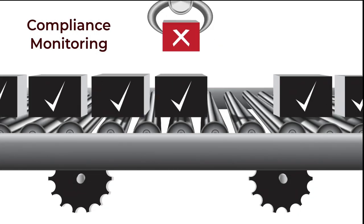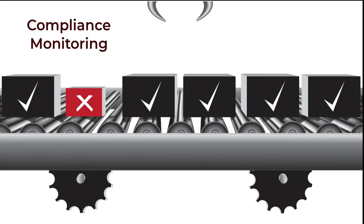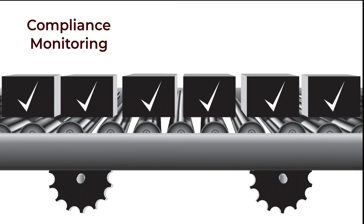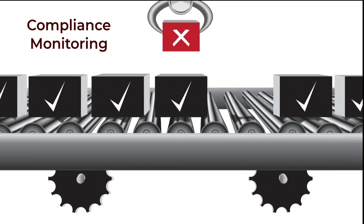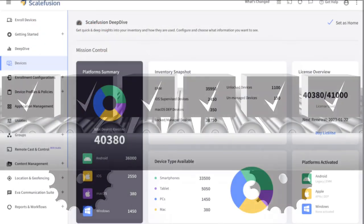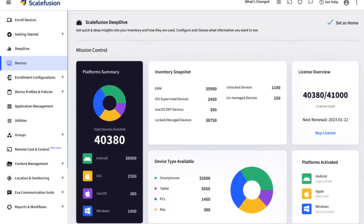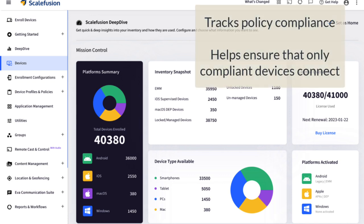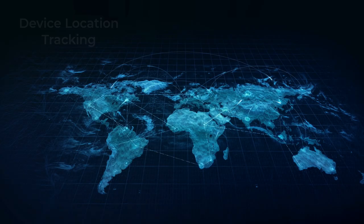Compliance monitoring and reporting provide visibility into the security and compliance status of devices, helping organizations ensure that all devices meet security and compliance standards. For example, Scalefusion offers compliance monitoring and detailed reporting, allowing IT admins to track the status of all enrolled devices. Compliance monitoring involves checking devices for adherence to security policies and generating reports that highlight any issues.